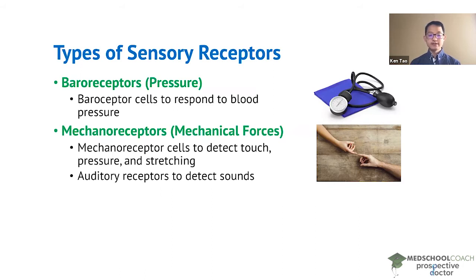However, another example of mechanoreceptors are the auditory receptors in our ear. Within our ear or auditory system, we have hair cells that detect mechanical stimuli in the form of sound. So, another example of mechanoreceptors.